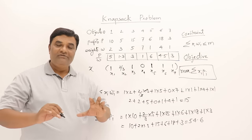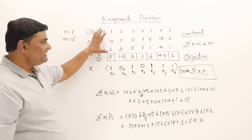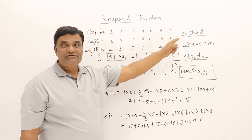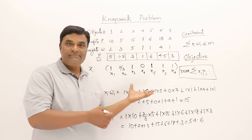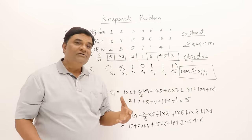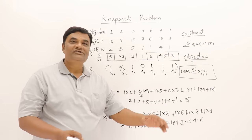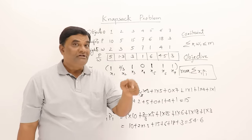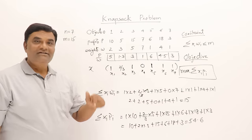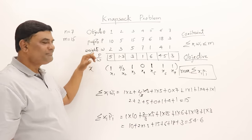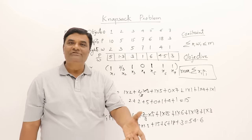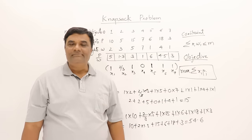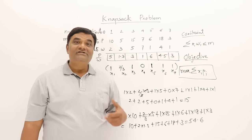To summarize the greedy method applied here: objects and the bag are given, and we include objects to maximize profit without exceeding the weight limit. We decided the selection criteria without trying every combination — we selected objects whose profit-per-weight is higher. Whoever has the highest per-kg value will give the maximum profit. That's all about the knapsack problem.